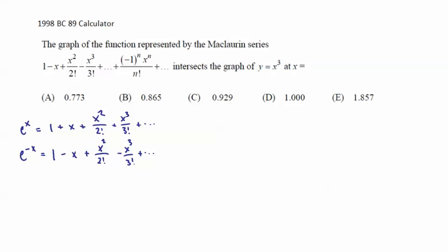Alright, then, once we know that, all we're really looking for is the intersection where e to the negative x is equal to x to the third, and then this just becomes a calculator problem at that point.